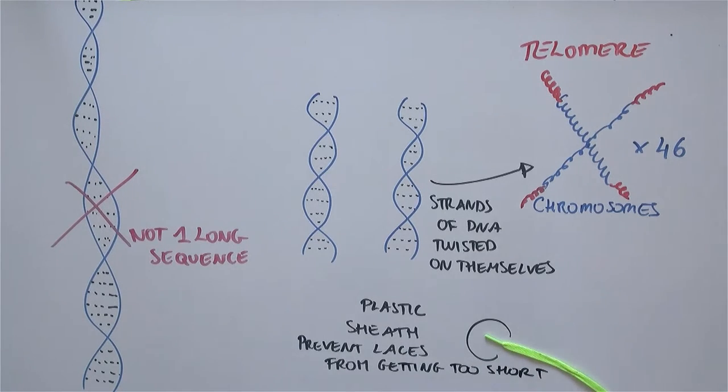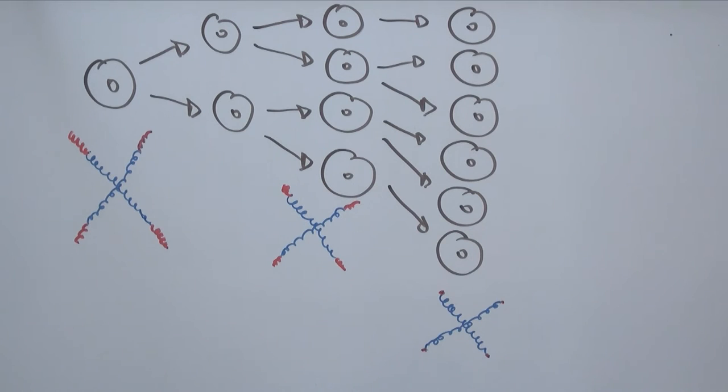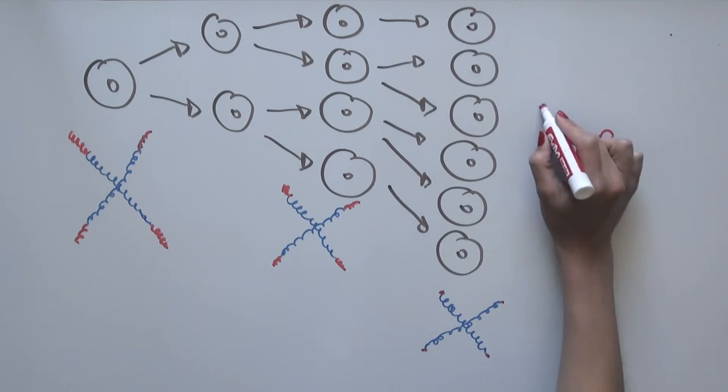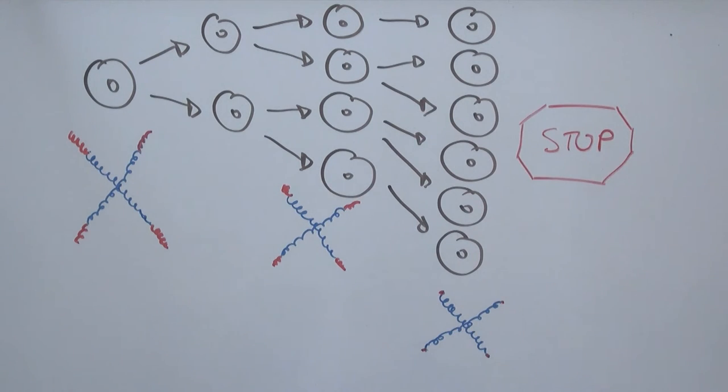As cells divide, the telomere in red gets shorter and shorter. When the telomere gets critically short, the cell can't divide. Similarly, if the plastic sheath on a shoelace is removed, you will eventually no longer be able to tie your shoes.